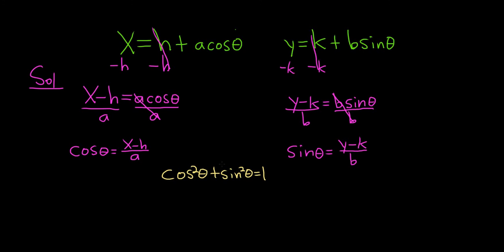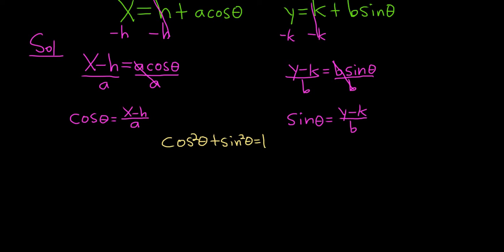Now all we have to do is replace each of these with what it actually is. So cosine squared will be x minus h over a, quantity squared, plus sine squared, that'll be y minus k over b, quantity squared, and that equals 1.